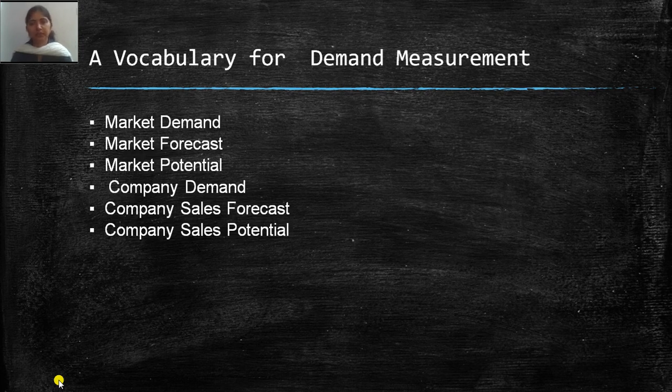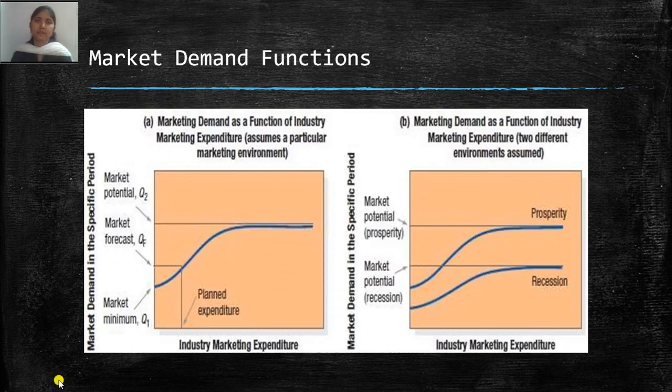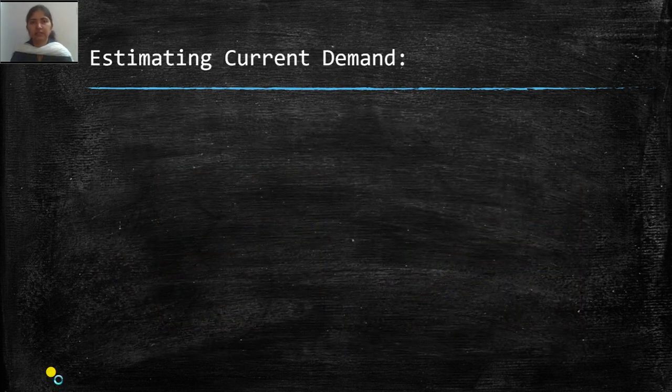Looking at market demand functions, you can see the vocabulary we discussed: market forecast, market potential, and market demand. On one side we assume the marketing environment remains the same. On the other, we assume two marketing environments: prosperity and recession. You can see the graphs differ. The amount of expenditure you incur in prosperity versus recession produces different results, so you must keep the environment in mind when forecasting demand.